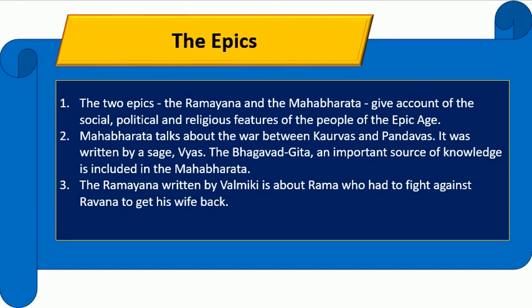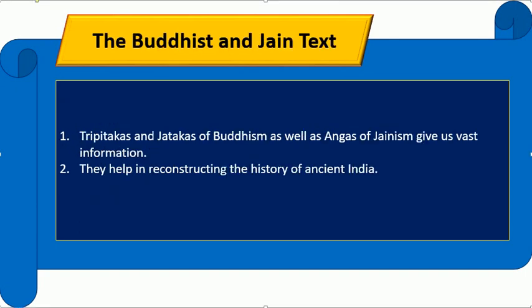The Ramayana, written by Valmiki, is about Rama who had to fight against Ravan to get his wife back. The Buddhist and Jain texts — Tri-Pitakas and Jatakas of Buddhism, as well as Angas of Jainism — give us vast information and help in reconstructing the history of ancient India.